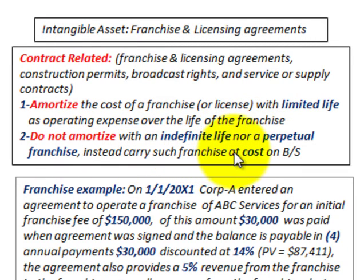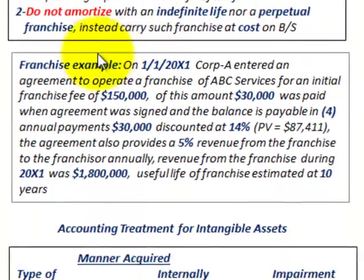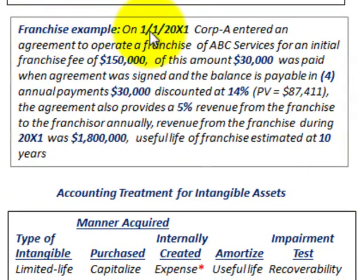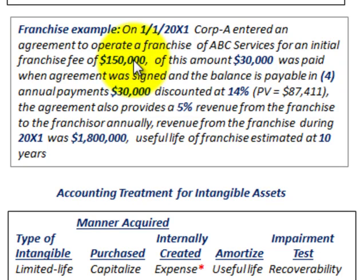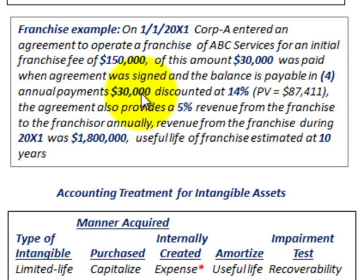Instead, you'd carry the franchise at its cost on your balance sheet. In our franchise example: on 1/1/20X1, Corporation A entered into an agreement to operate a franchise of ABC Services for an initial franchise fee of $150,000. Of this amount, $30,000 was paid when the agreement was signed, and the balance is payable in four annual payments of $30,000 each, discounted at a 14% interest rate, giving a present value of $87,411.